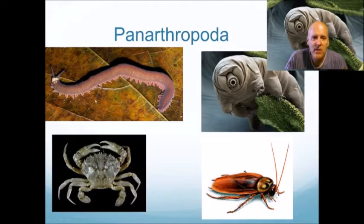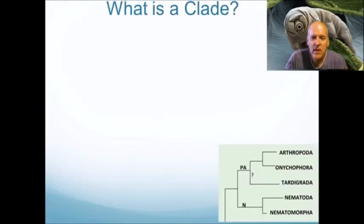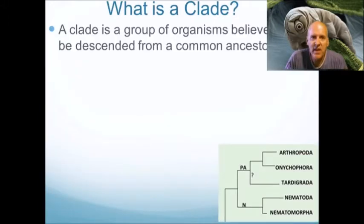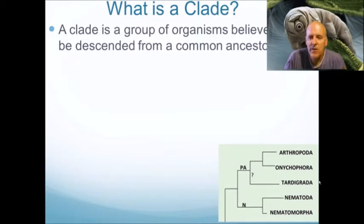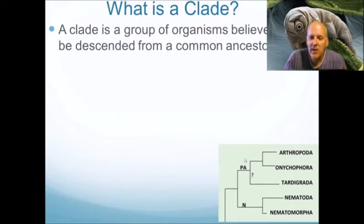The Pan Arthropoda includes the velvet worm, the tardigrade — which the internet loves, they're very cool — and arthropods like crustaceans and insects. Pan Arthropoda is a clade — a group of organisms believed to be descended from a common ancestor. If you look at this family tree, all of these organisms descended from a common ancestor, and you can go back far enough so that all animals are in the same clade.